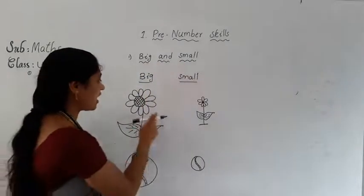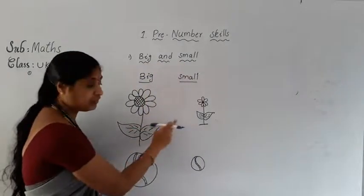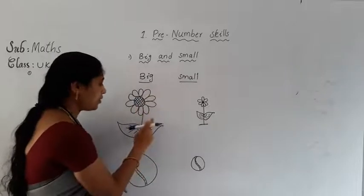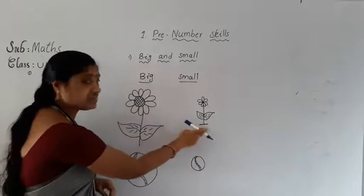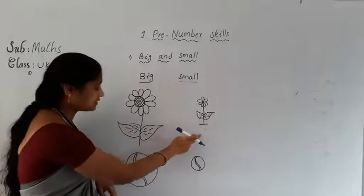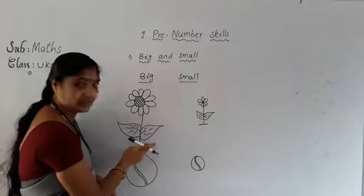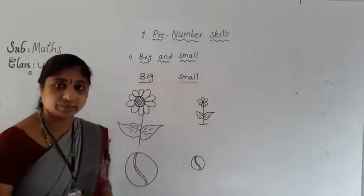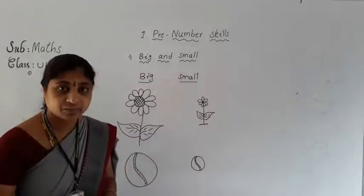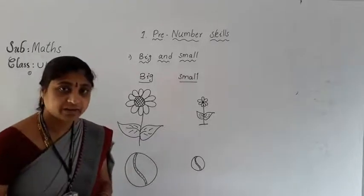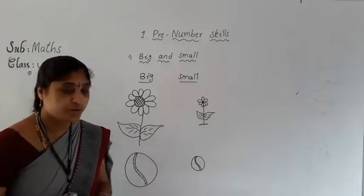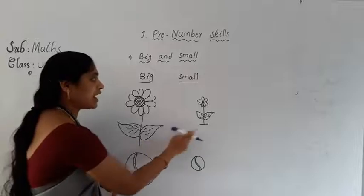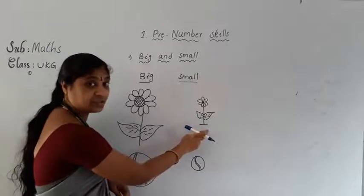Look at here, already I have drawn here flowers. See here, big. What is this? These are flowers. In these flowers, have same size? No — one flower is big, another flower is small.